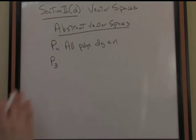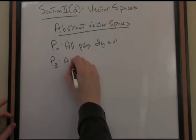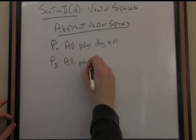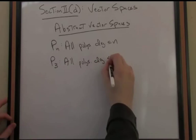So for instance, let's consider P3. So P3 then would be the vector space of all polynomials of degree less than or equal to n. In other words, all cubic or lesser degree polynomials.